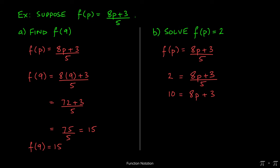At this stage we can subtract the 3 from both sides yielding 7 equals 8p. Finally, to get p by itself we can divide the 8 over to the left hand side giving us p equals 7 over 8.